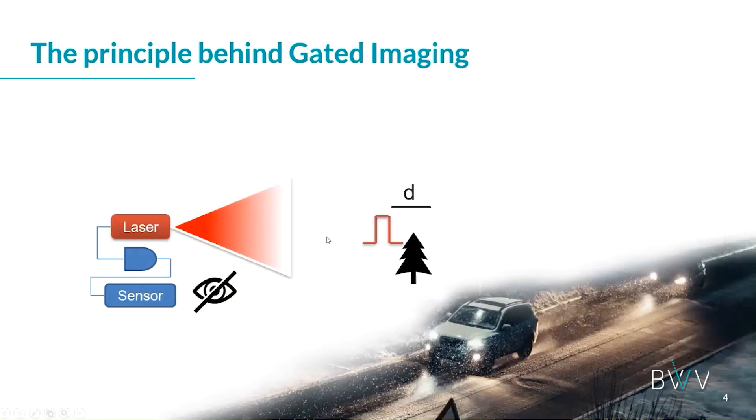A LiDAR measures the time and registers the time that the pulse is returned. In gated imaging, we predetermine the sampling range without knowing if there is something there or not. So this is similar, but on the other hand, it's also very different.